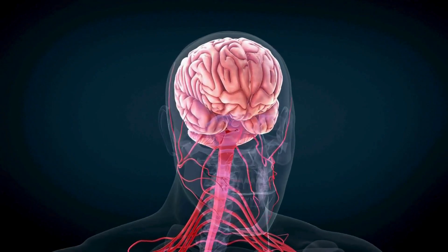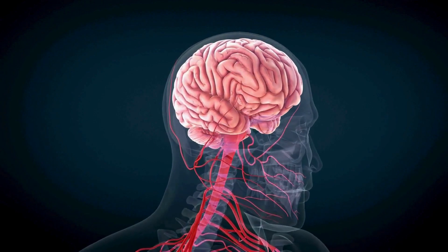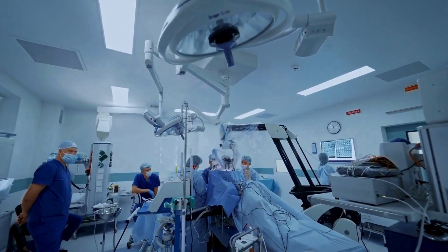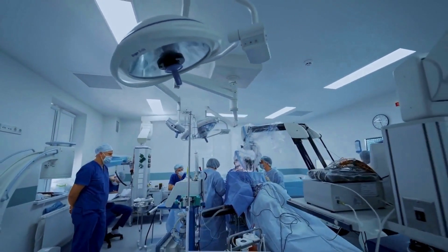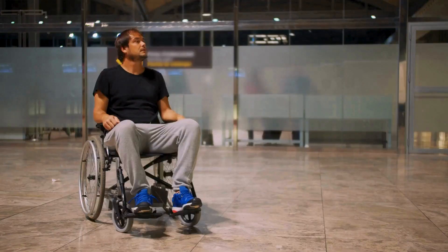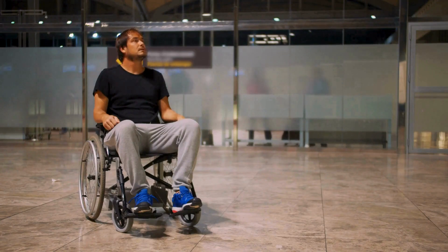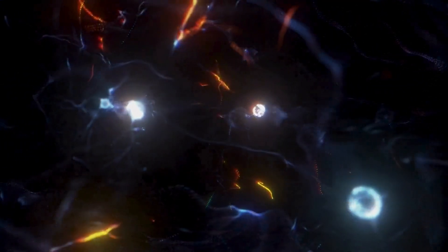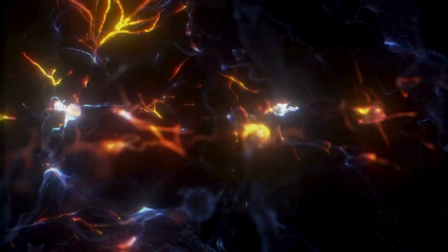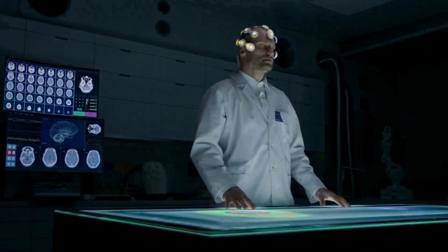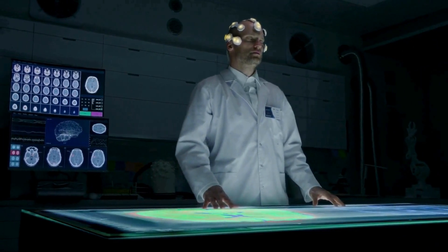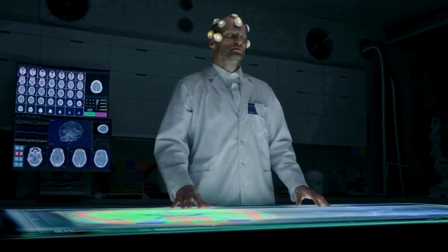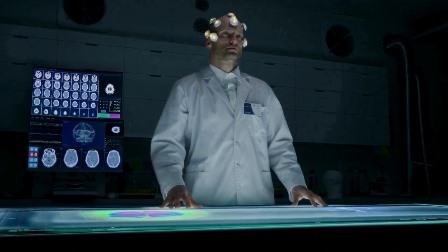Neuralink made history when it implanted its device in a human brain for the first time. This groundbreaking clinical trial was all about pushing the boundaries of brain-computer interface technology. The goal: to give individuals with severe paralysis the power to control devices with their thoughts. The results of this first trial were promising to say the very least. Neuralink's device detected neuron spikes, which are the electrical discharges that neurons use to communicate. This is a significant step towards the goal of thought-controlled devices. However, it's important to remember that this is just the beginning.